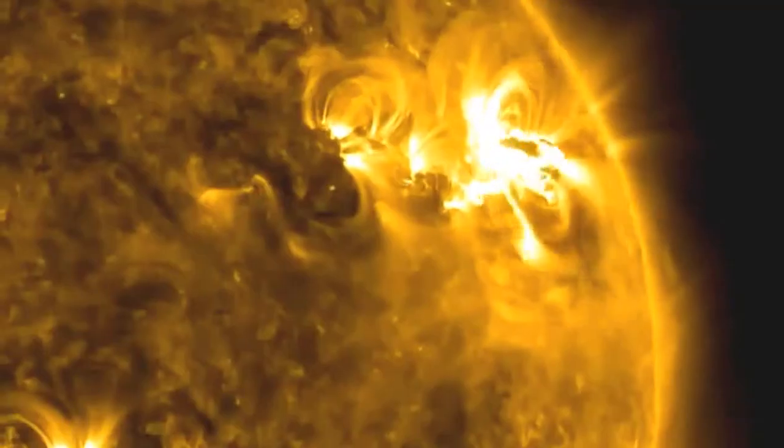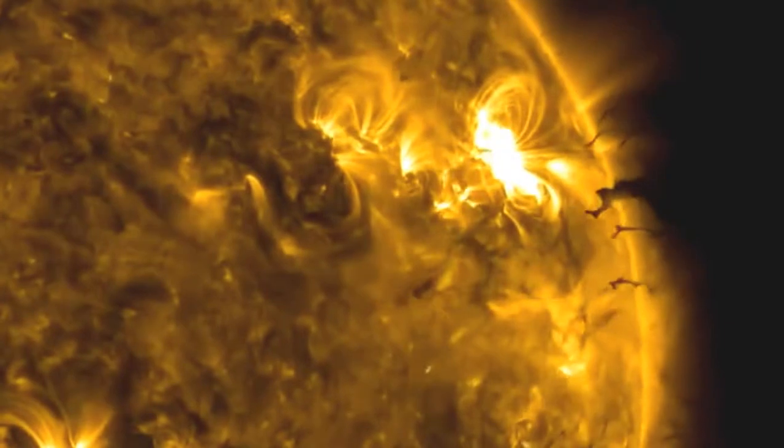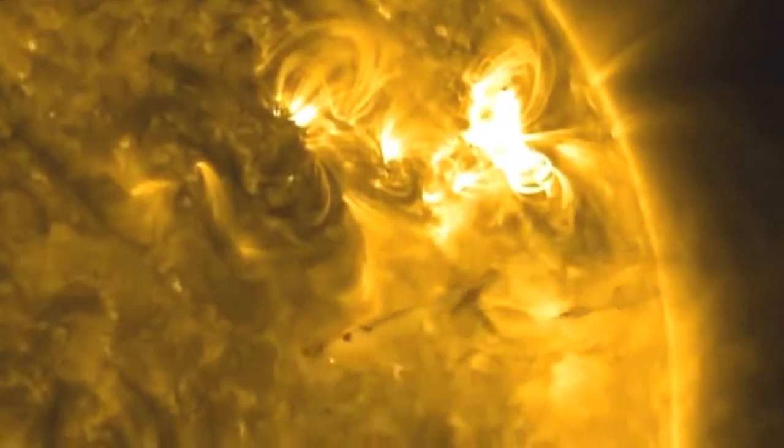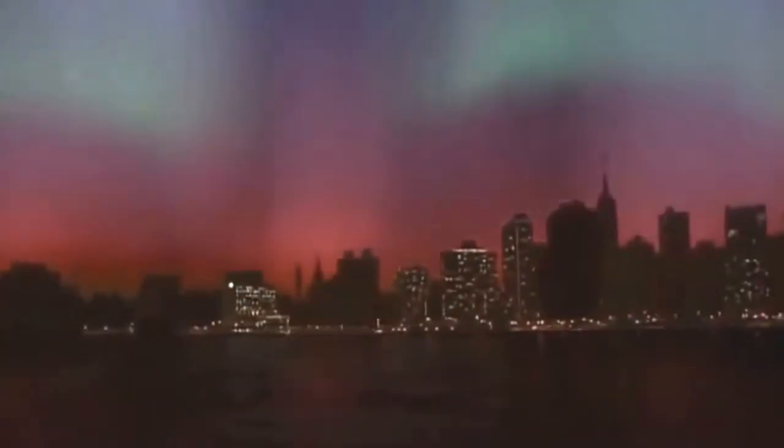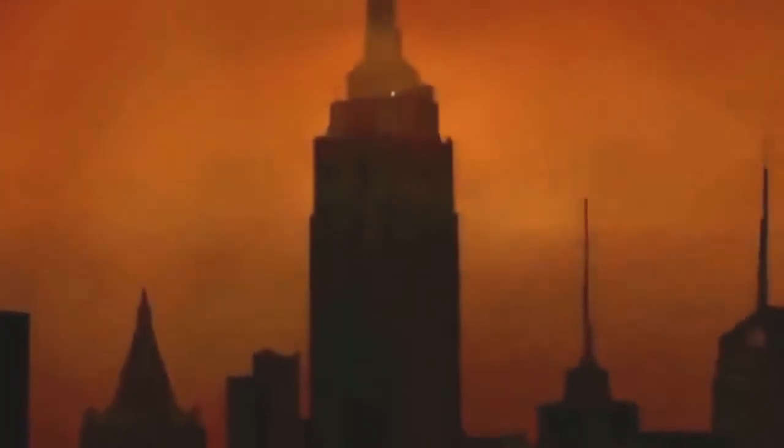Our sun has a dark side. Its violent storms capable of taking down the electrical grids that power our daily lives. The repair could take weeks, months, and even in the worst case scenario, up to 10 years for a full recovery. If you can imagine a world without electricity, you're really going back in time.